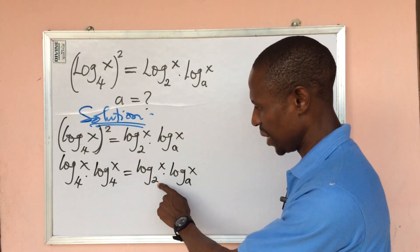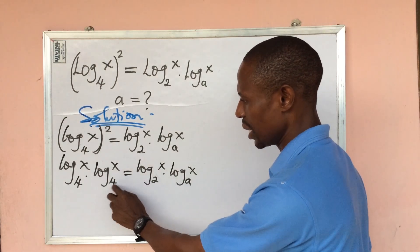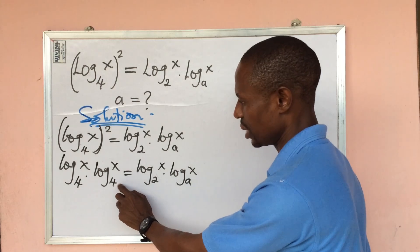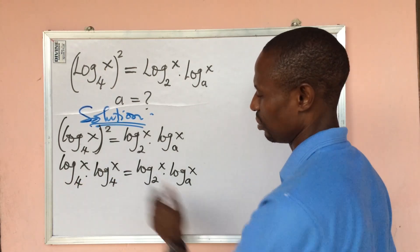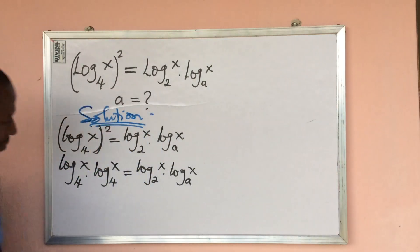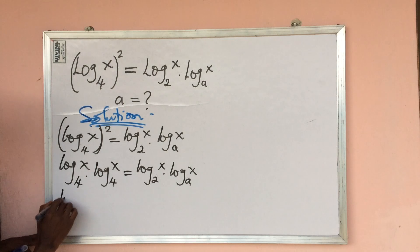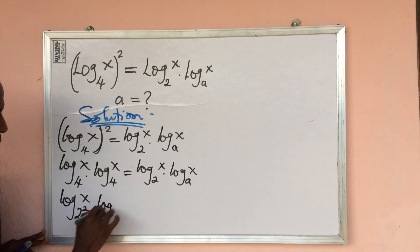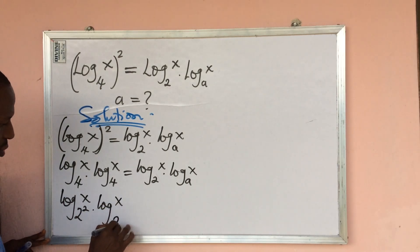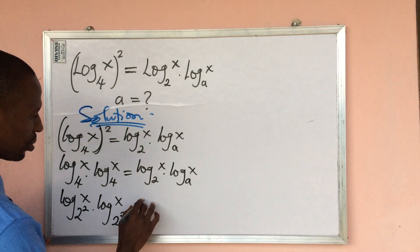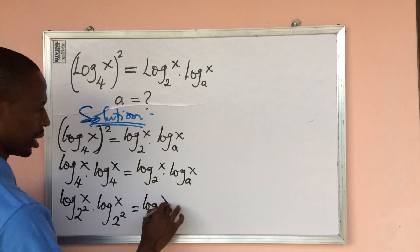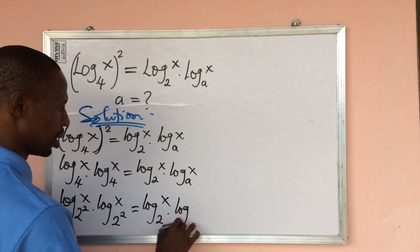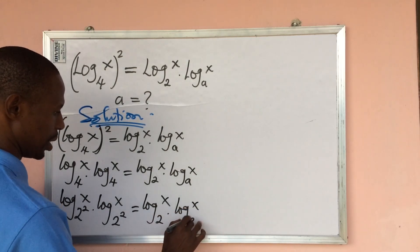Here we are having base 2, so I want to bring out base 2 from the left-hand side. We can rewrite 4 as 2 to the power of 2. So this now becomes: log x base 2² times log x base 2² equals log x base 2 times log x base e.